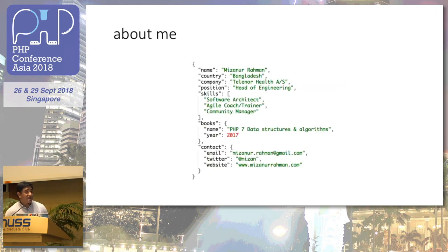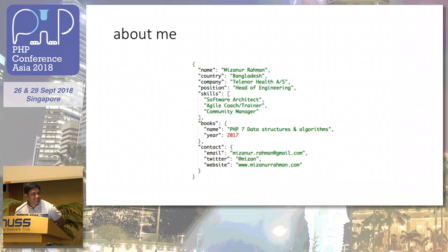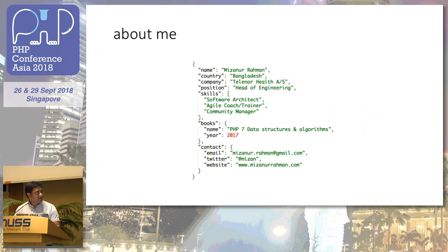I'm Mizan, from Bangladesh. I'm currently working at Telenor Health as head of engineering. I'm mainly a software architect with around 16 years of PHP experience. I do some writing, and my latest book was on PHP 7 Data Structures and Algorithms.